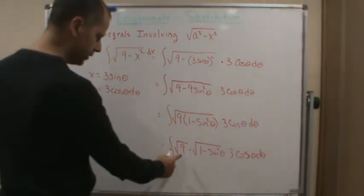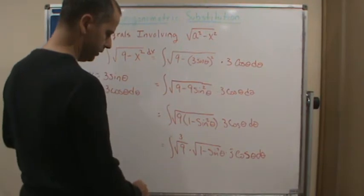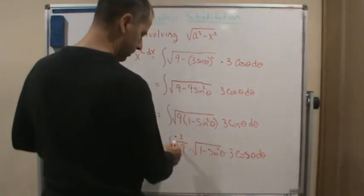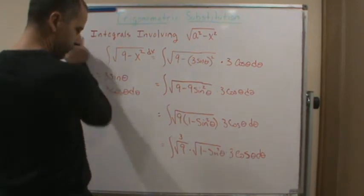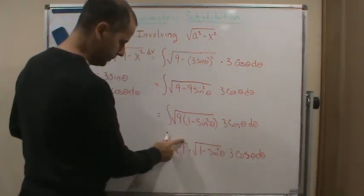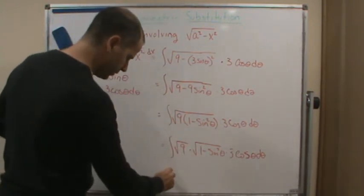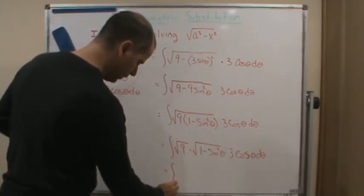Now, this just becomes 3, right? The square root of 9 is just 3. And this is 3, so I can multiply those together. So I take the square root of 9, which is 3. 3 times 3 is 9. So this is going to give me this 9.